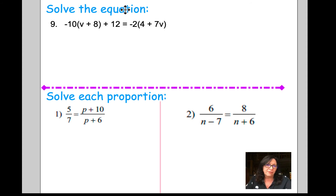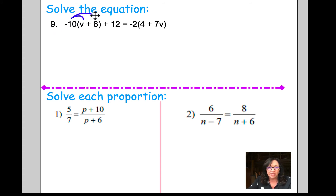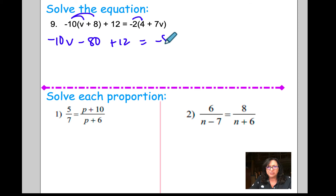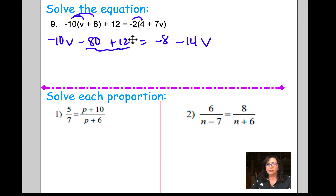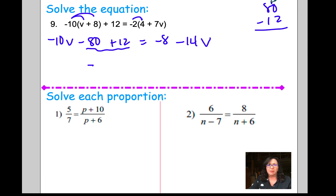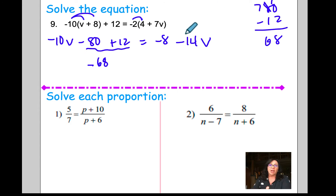For this problem, solving the equation, I need to distribute first. That's negative 10 times v and negative 10 times 8, so I get negative 10v minus 80 plus 12 equals negative 2 times 4, which is negative 8, minus 14v. Combining negative 80 plus 12 — you have a negative and a positive number, take the sign of the higher number and subtract. Go 80 minus 12, and we have negative 68.